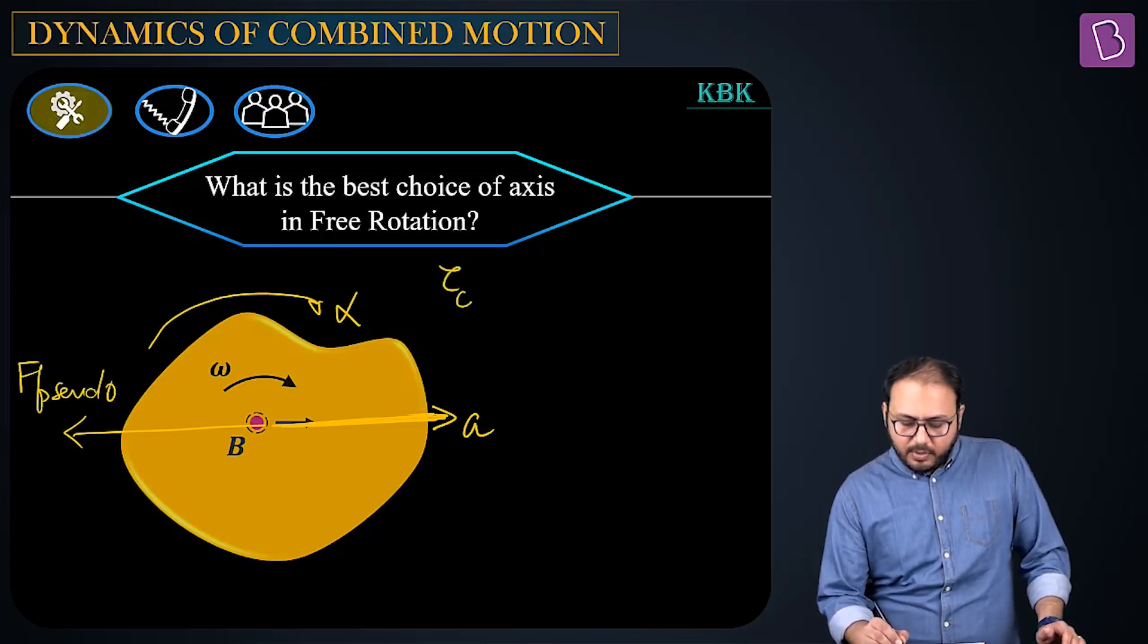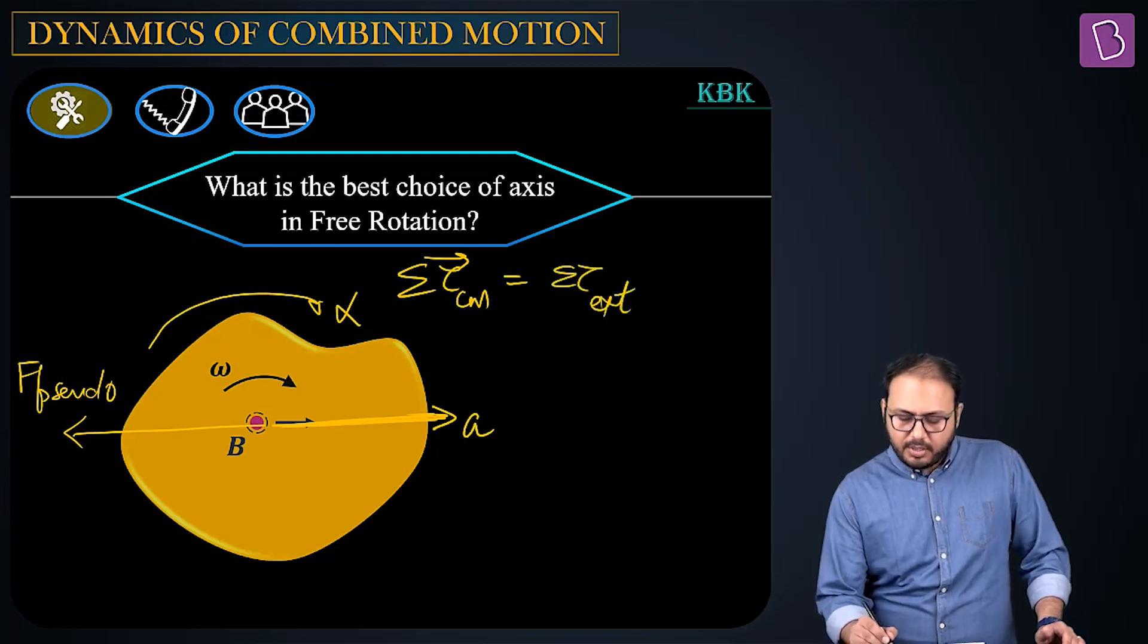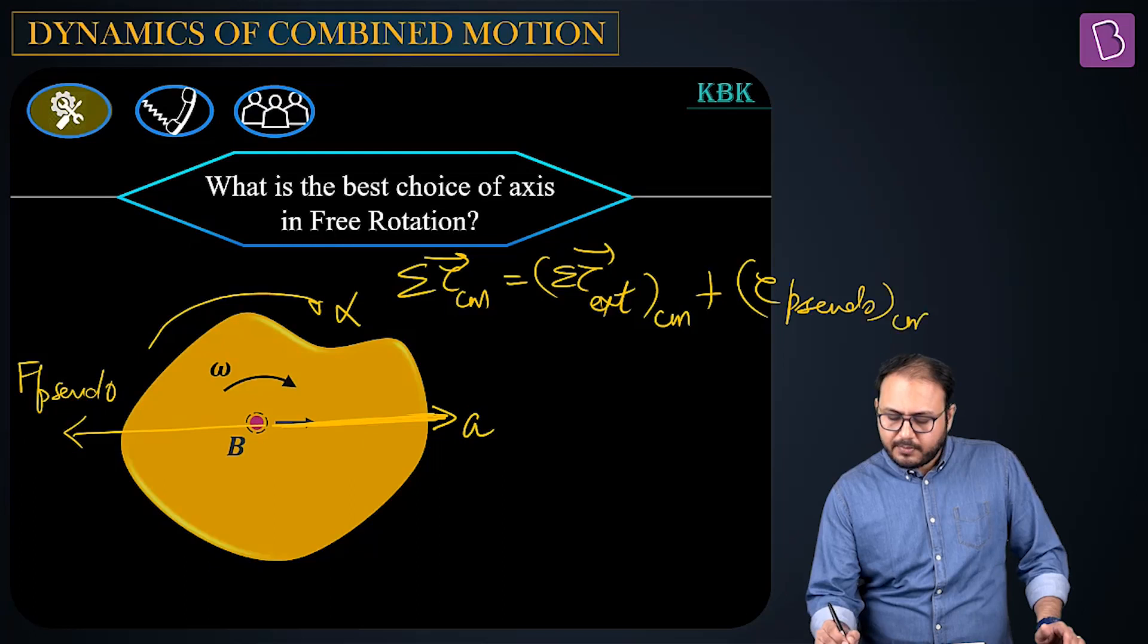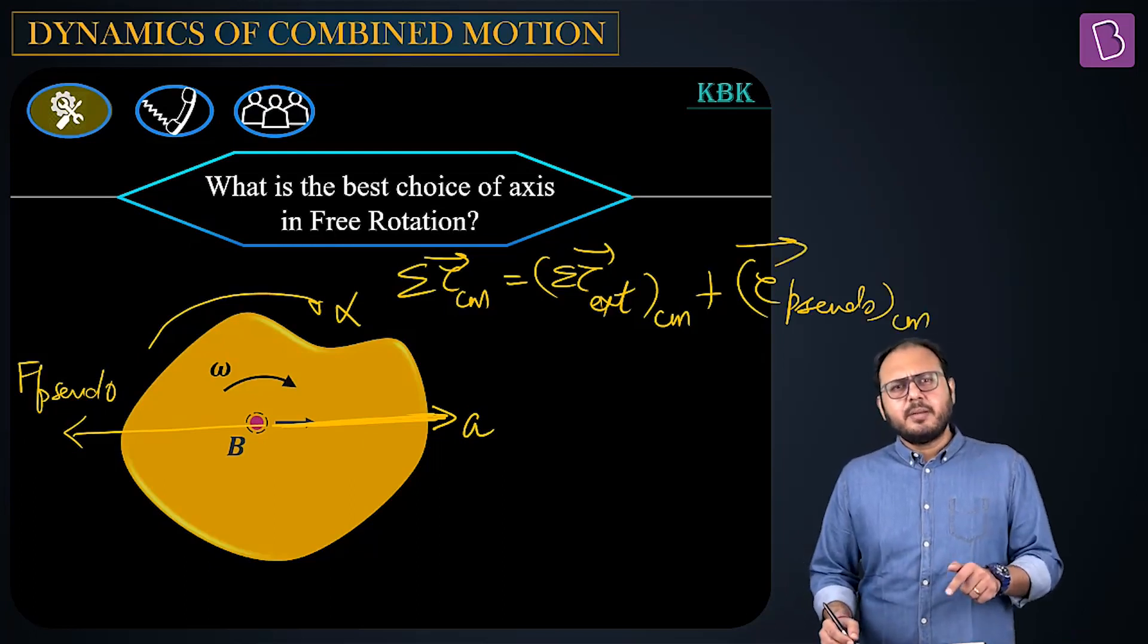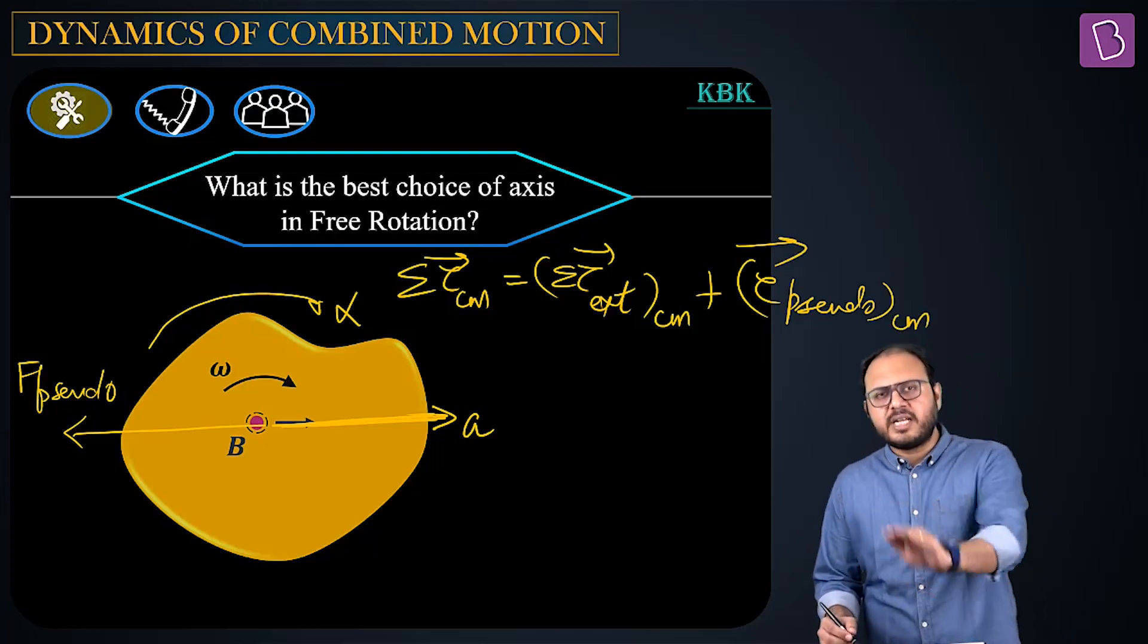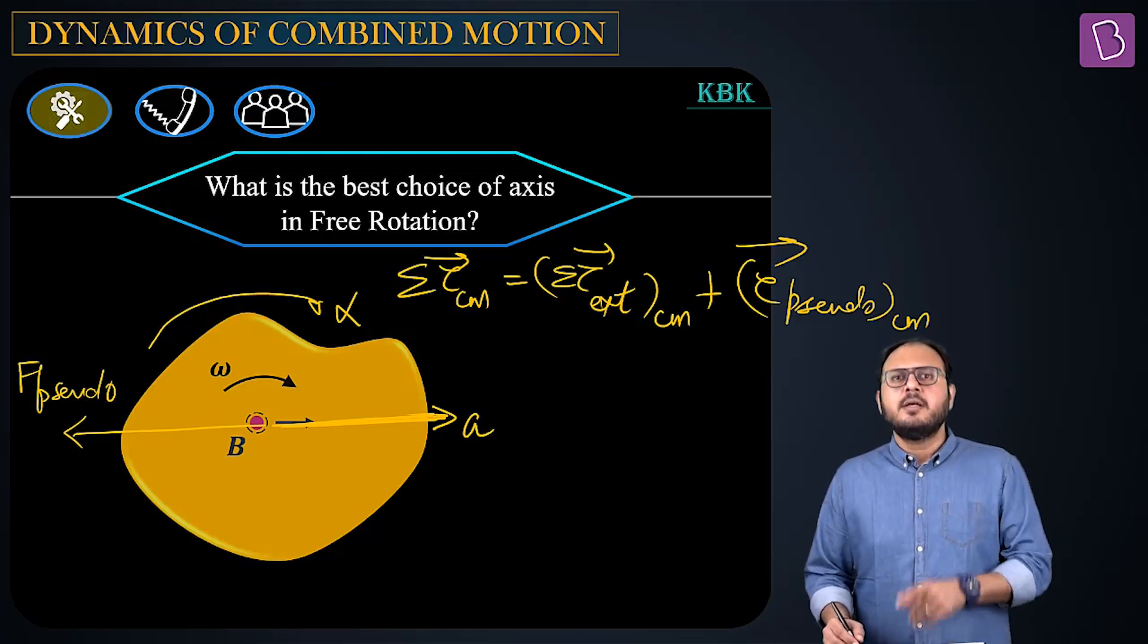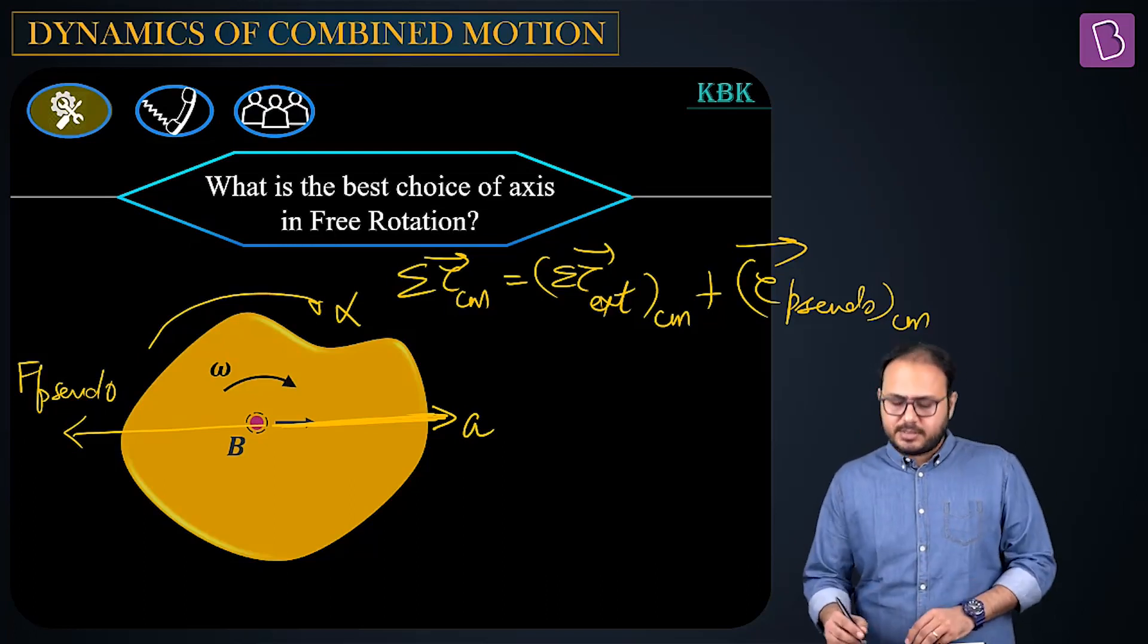So when you take torque about CM, summation torque about CM, it would be summation torque external CM plus torque pseudo CM. But isn't CM the point of application of pseudoforce? Yes sir. So if the pseudoforce is passing through center of mass, then what is its torque about center of mass? If the pseudoforce is passing through center of mass, then what is its torque about center of mass?